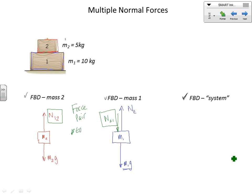Force pairs are always equal and opposite. Now isn't N21 here just really the weight of that object? Yes — the net force in the y-direction on m1 is zero, so N21 does equal m2g. But for the idea of the force pair it's nice to write them as normal forces.